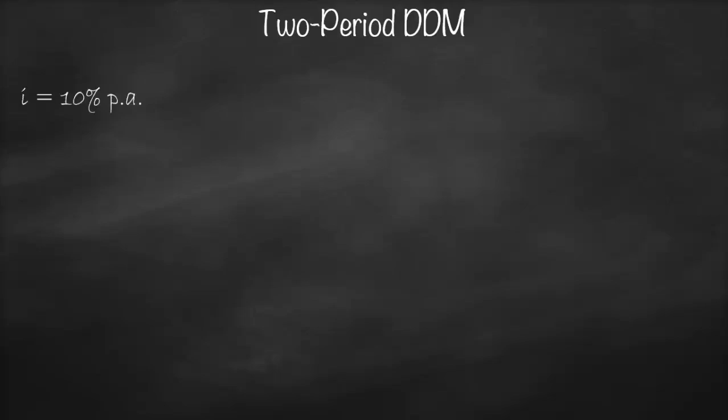Another type is the two-period DDM, which means we will hold the share for two periods. Let's assume the same annual interest rate of 10% per annum. We have two years: in year one we get a dividend of $1, in year two we get a dividend of $1, and then we will sell the share for $11.10 at the end of year two. To get the price of the share today, we need the present value of the dividend in year one, the dividend in year two, and the selling price in year two.